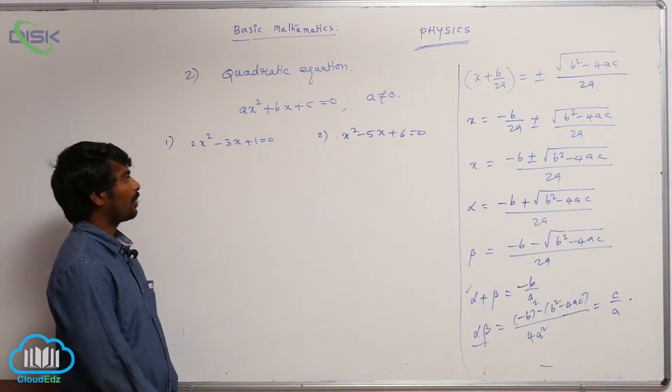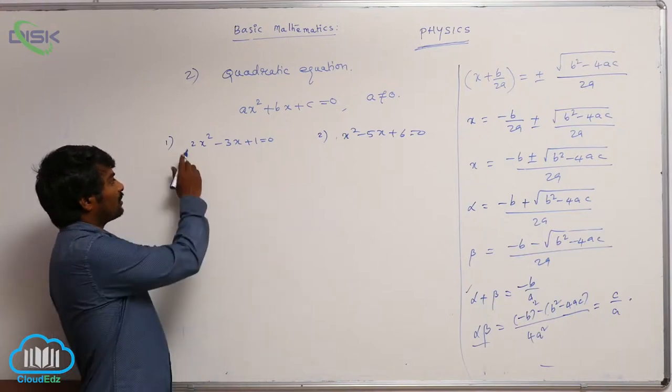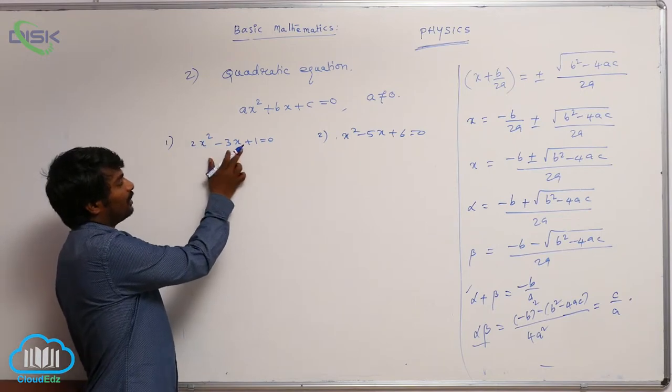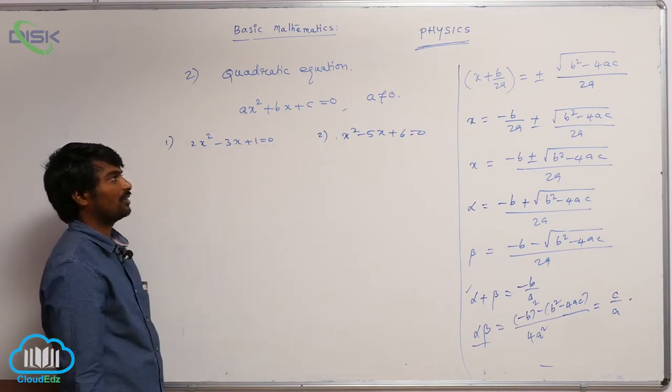Let us see two examples. The first example is 2x square minus 3x plus 1 equal to 0. Let us calculate the roots of this equation.